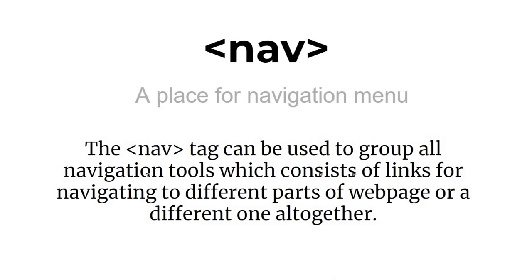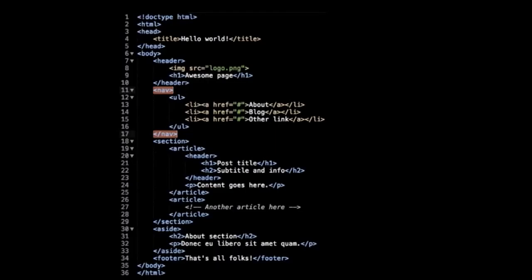The nav tag is used to group all navigation tools — links for navigating to different parts of the web page or to other pages entirely. Many websites have a navigation bar, and when you click on an item it either jumps to a section of the same page or goes to another page. I'll create an example using a nav tag with an ordered list containing list items.